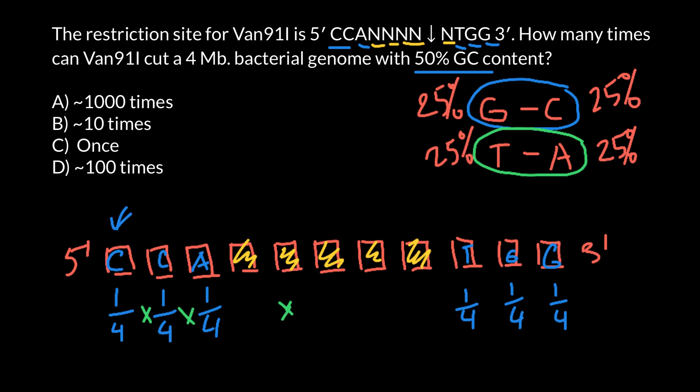And we will find the probability of such a sequence happening at random. This basically means one quarter multiplied by itself six times, or one quarter to the power of six, which gives us one over 4096.